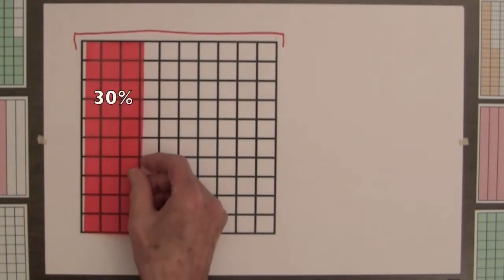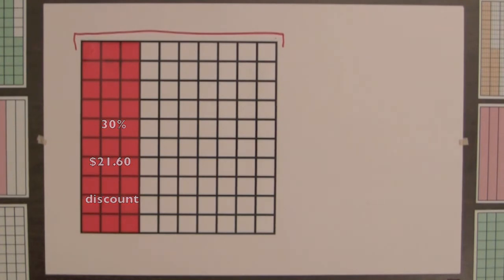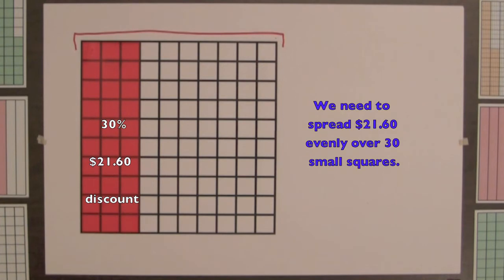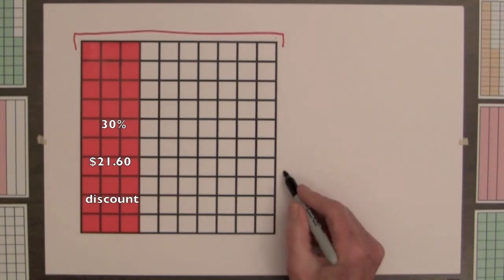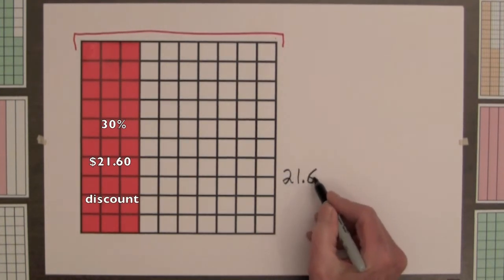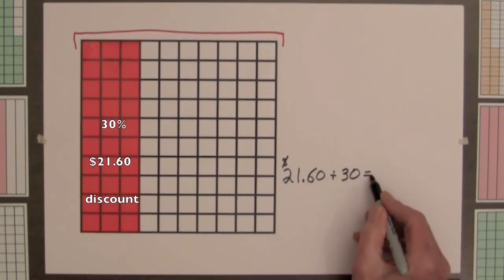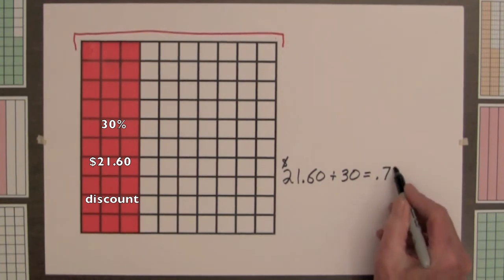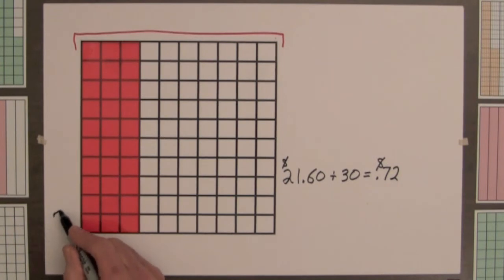We shade this square for 30%. Since 30 small squares represent $21.60, we need to spread $21.60 evenly over the 30 small squares by dividing. $21.60 divided by 30 equals 72 hundredths of a dollar. And we record this: 72 hundredths of a dollar.